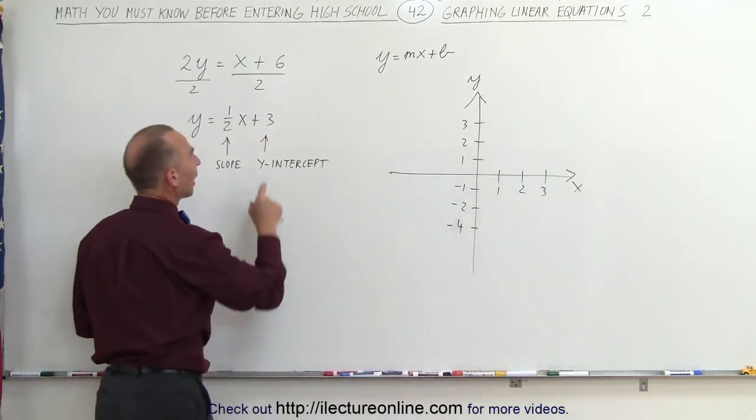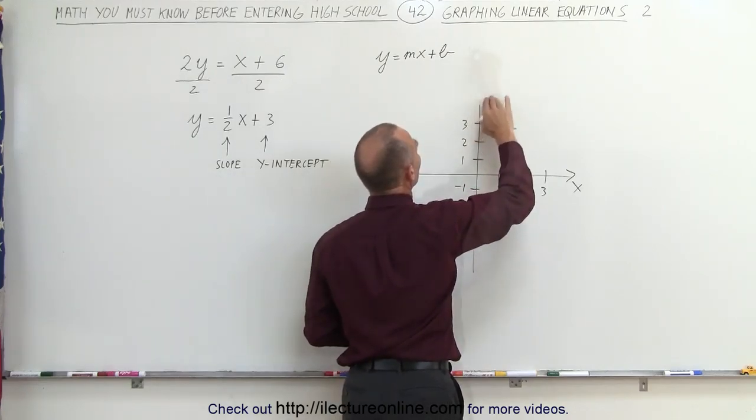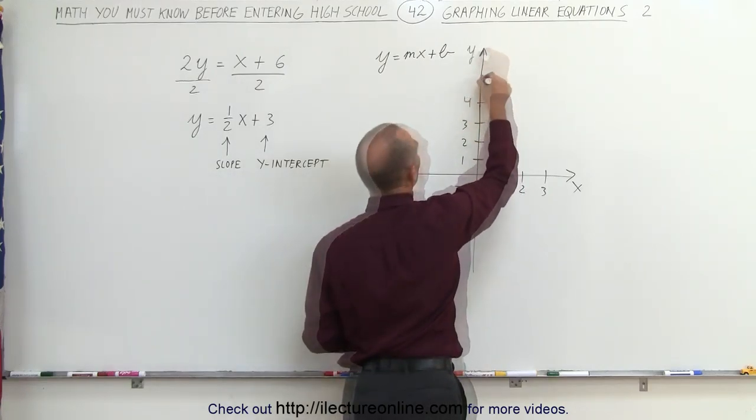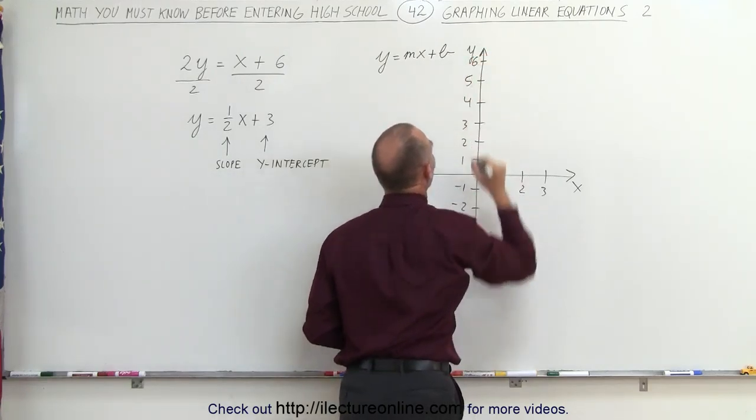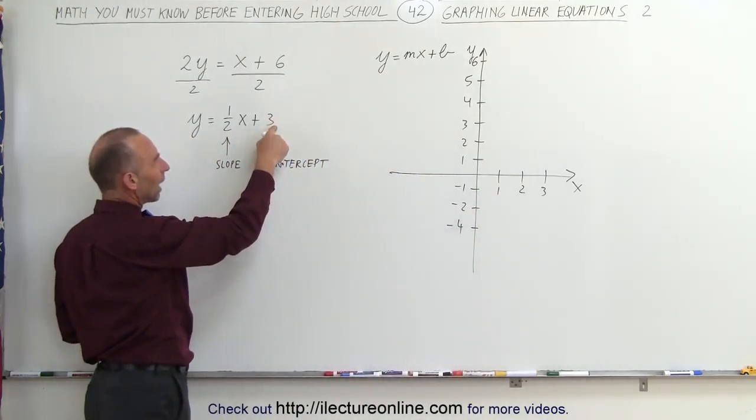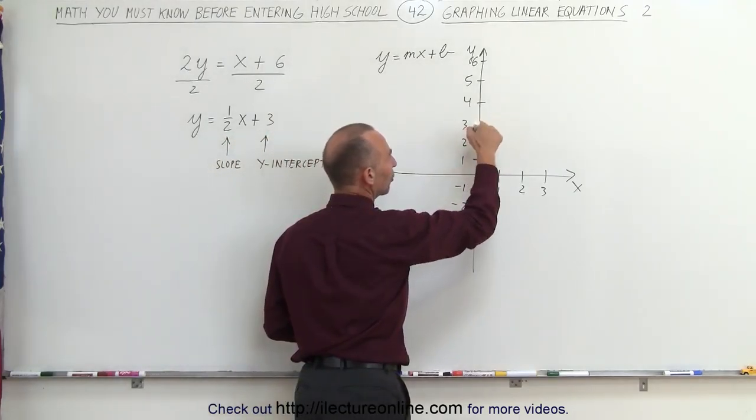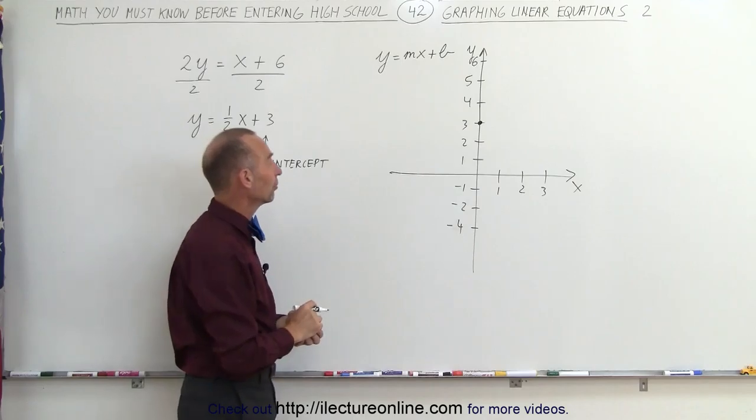First of all, we find the y-intercept. Oh, I think I'll need to make that a little bit taller because my y-intercept is way up here, the number 5, the number 6, and so forth. Notice the y-intercept is at y equals 3. I find the y-intercept right here. I know that the line crosses the y-axis at that particular point.